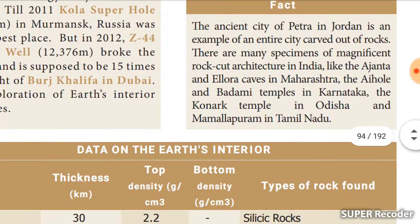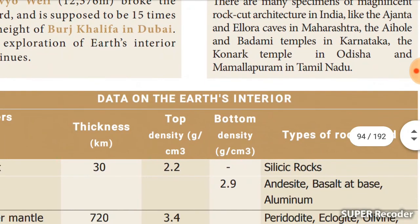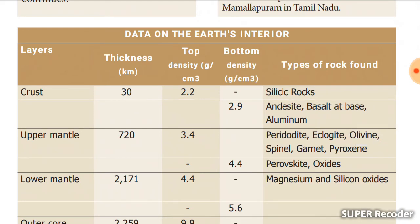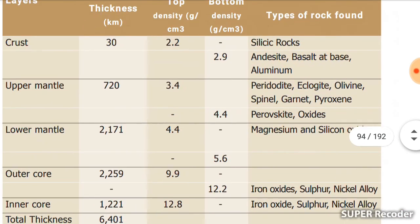You can see some caves and rock architecture in India, like the Ajanta and Ellora caves in Maharashtra, rock temples in Karnataka, the Konark temple in Odisha, and Mahabalipuram in Tamil Nadu. These are all important rock temples carved in rock. The table here shows the earth's interior layers — their thickness, density, and the types of rock found in the upper crust, upper mantle, lower mantle, and outer core.